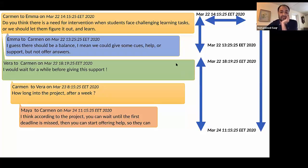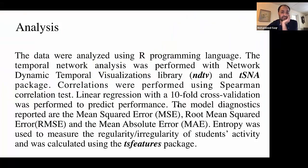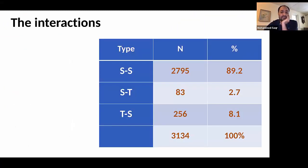The data was analyzed with R. Please refer to the paper to see the libraries that we have used. We had in that course 3,034 interactions. Most of them have been interactions between students and students. Student and teacher were around 830. Teacher to students were around 256.